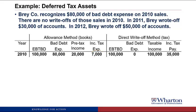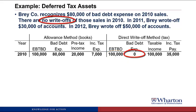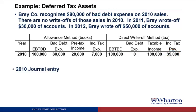For tax purposes, we use the direct write-off method, recognizing bad debt expense when accounts are actually written off, not when sales are made. Assuming the same EBITDABE of $100,000 and no bad debt expense because nothing was written off, taxable income is $100,000 times 35%, giving income tax payable of $35,000. Now try to do the journal entry in 2010 for income tax expense and income tax payable.